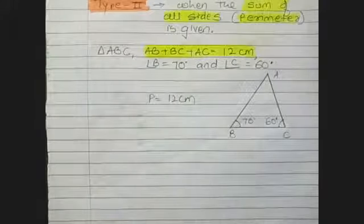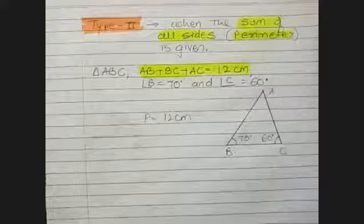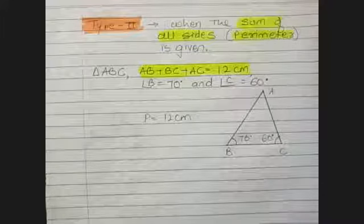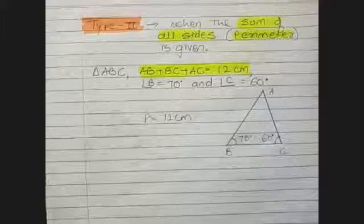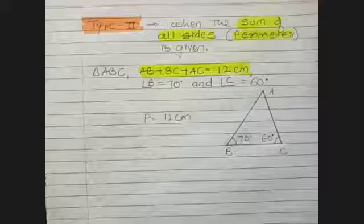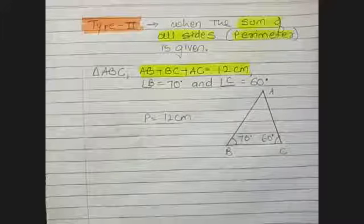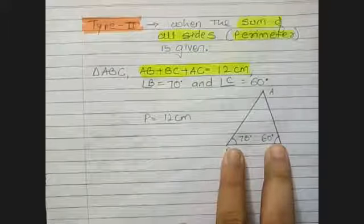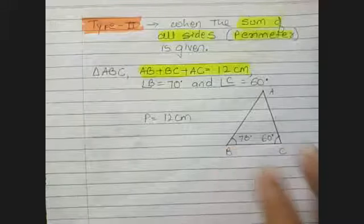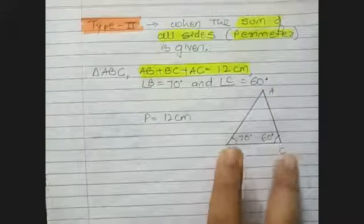Now let us see Type 2: when the sum of all sides is given — that is, the perimeter. In triangle ABC, AB plus BC plus AC is given. Remember that for this type, two base angles are also given, such as angle B and angle C.